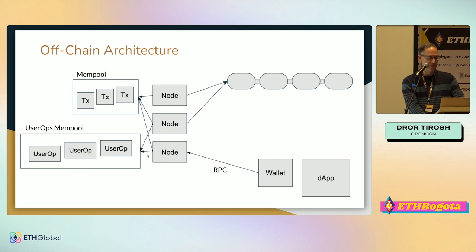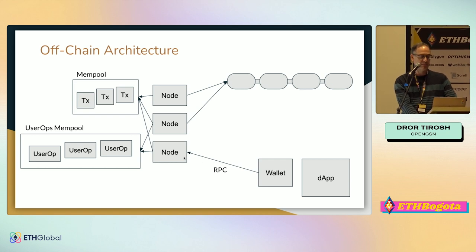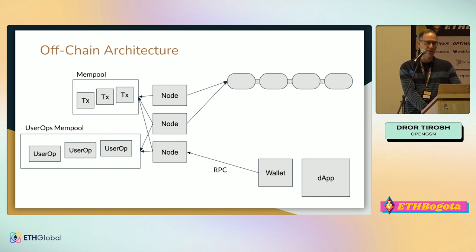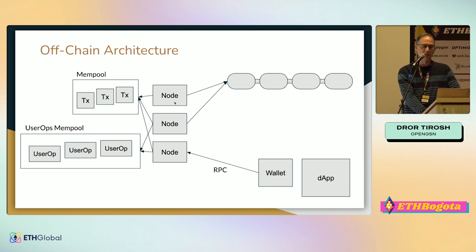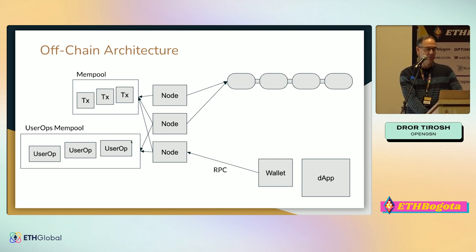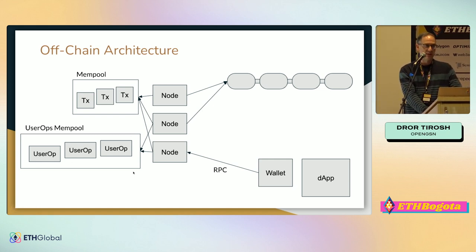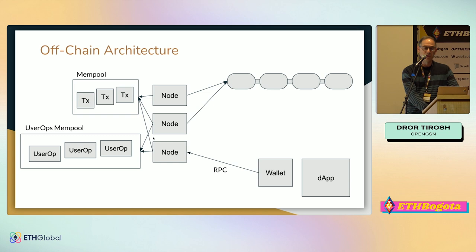If we look briefly at how we add it to the system: we have an application that uses the wallet software and sends the RPC. Account abstraction doesn't come to replace normal transactions in one shot — some nodes continue to work with transactions, some also handle user operations. User operations come from a separate mempool. We would like all nodes to support user operations and account abstraction, but the system will work fine even if only part of the nodes support it.